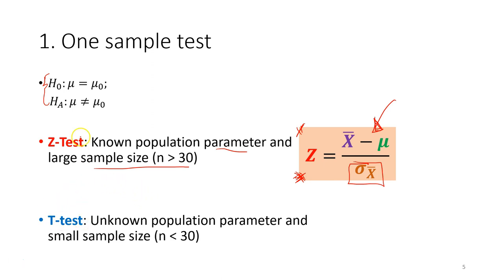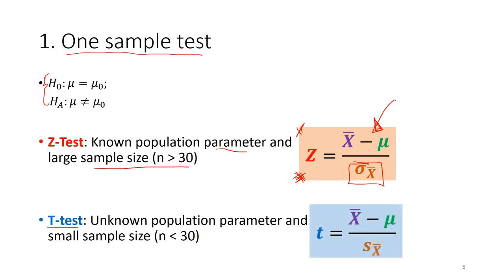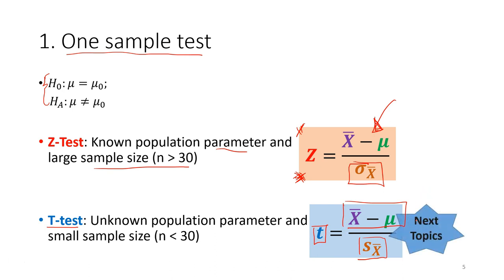Another test we can use for a one-sample test is the t-test. This is the test we use when we have an unknown population parameter and a small sample size. As you can see, the t-test formula is very similar to the z-test, but they differ slightly in terms of their standard error and the calculated statistic. We will discuss the t-test in detail in the next lectures.